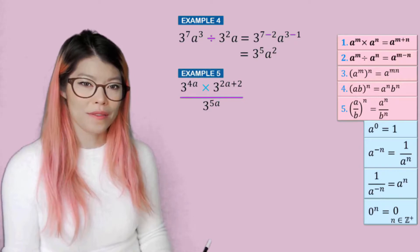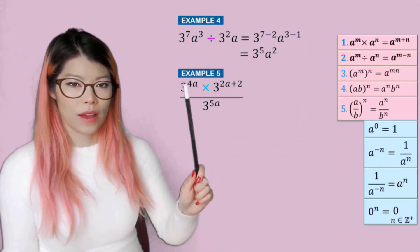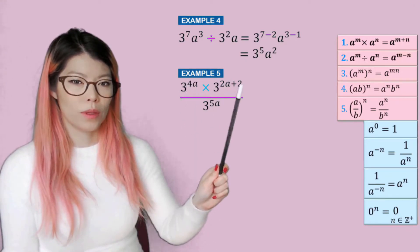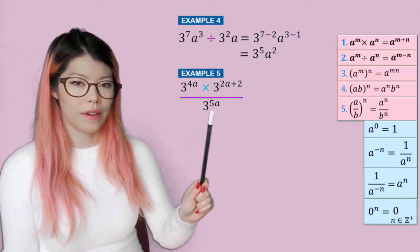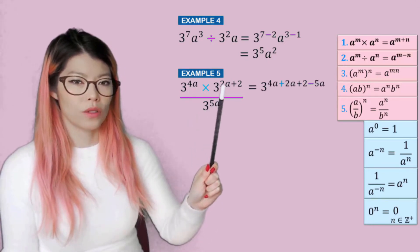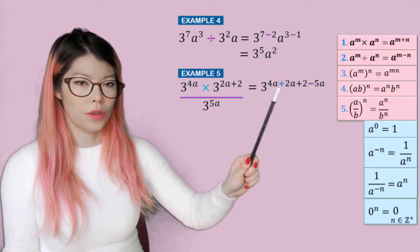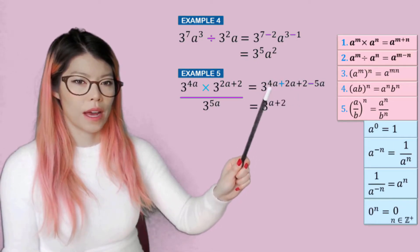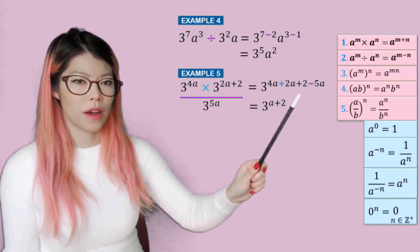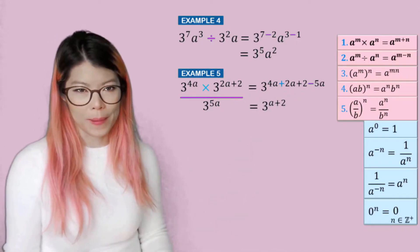Example five: here we have a combination of the first two rules. We have the same base. When we multiply, we add these together, and divide means we subtract. So four a plus two a plus two minus five a is our new power. So four a plus two a is six a minus five a is just a, plus the two.